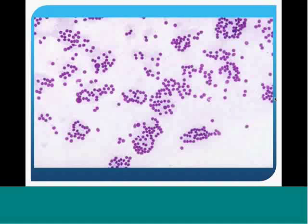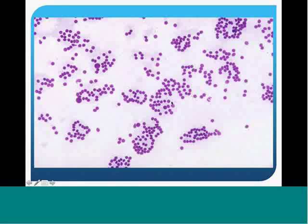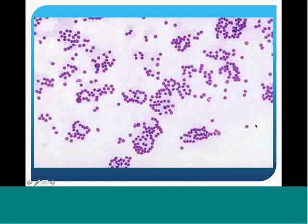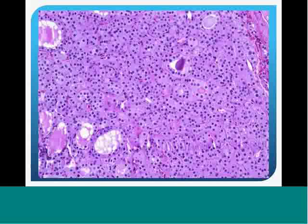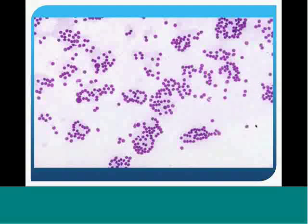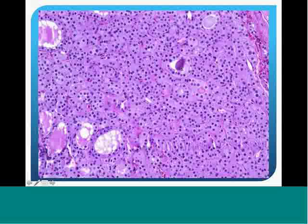These are also follicular cells with abundant follicular cell groups arranged in microfollicles—small clusters, some single, but mostly in small acinar or microfollicular arrangements. They turn out to be a follicular adenomatous nodule with very little colloid; the colloid that is present is very thick.